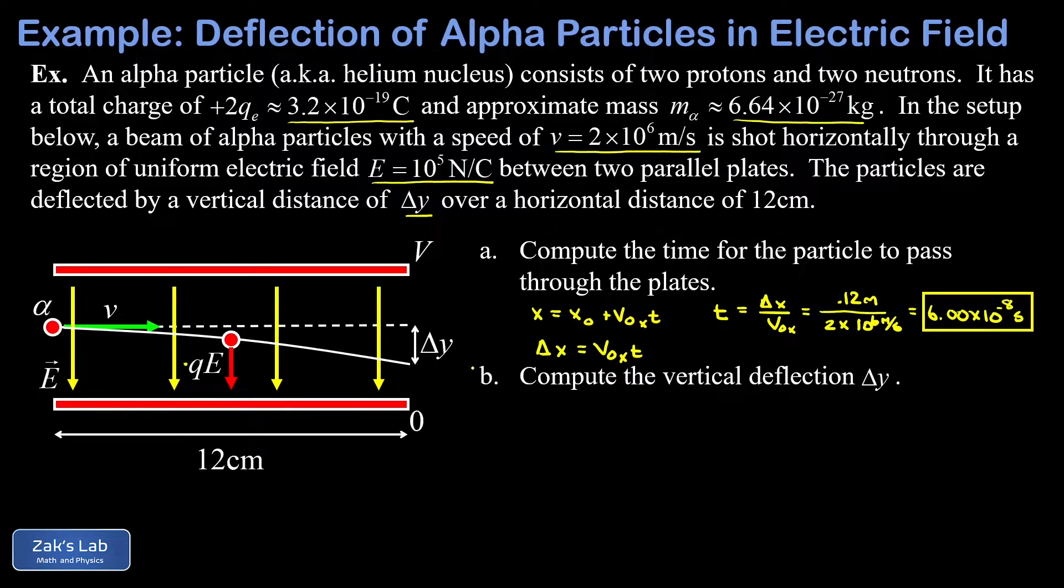Now, in part B, we're asked to actually get the vertical deflection delta Y, which is the main goal of the problem. So this time we're going to do an analysis of the Y coordinate of the motion. So I can write Y equals Y0 plus V0YT plus 1 half AY T squared.